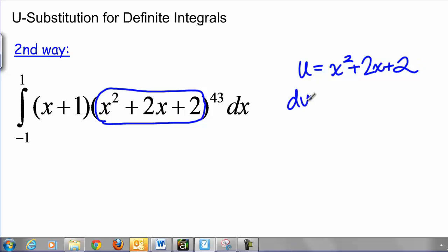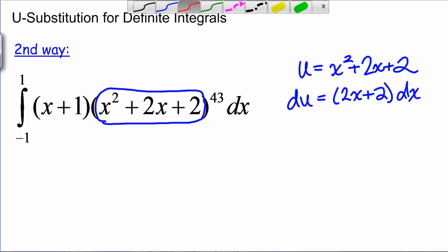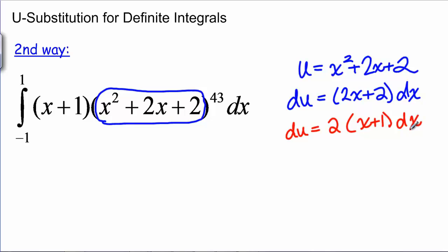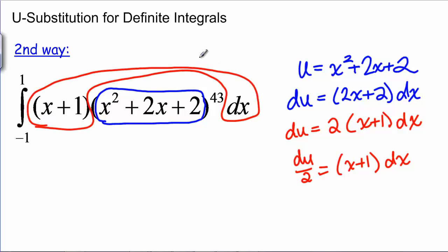So we take the derivative. We get du equals 2X plus 2 dx, and we have an X plus 1 dx left over in our problem. We're looking for 2X plus 2 dx. So notice the difference here is just a factor of 2. So if we factor out a 2, we can get du equals 2 times (X plus 1) dx, and dividing that 2 over, we get du over 2 equals (X plus 1) dx.